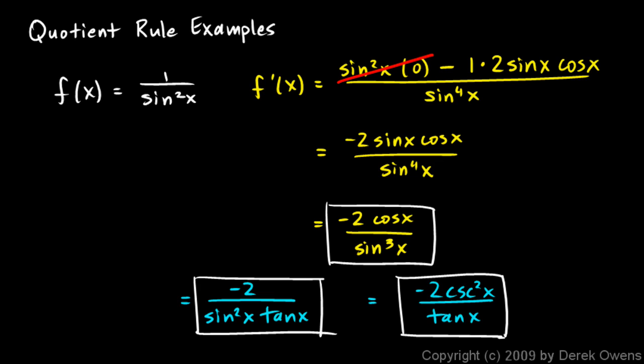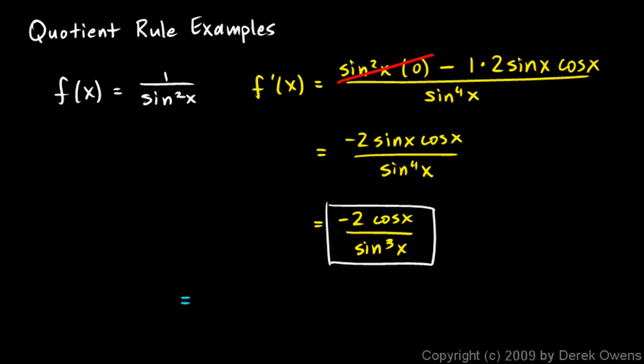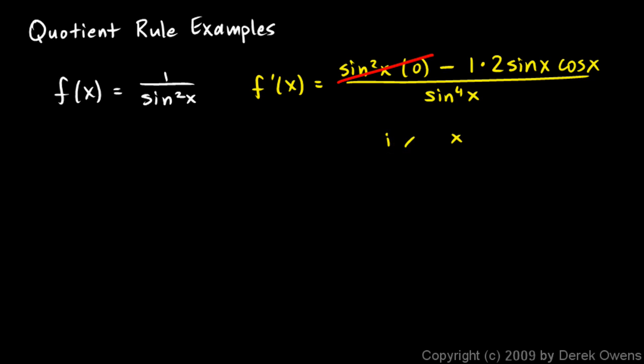Now that said, let me show you another way to solve this problem that's actually easier. Instead of solving this as a quotient rule problem, let me erase all of this. I'm going to solve this a different way. I'm going to think of my original function, f of x, as being sine of x to the power of negative 2.